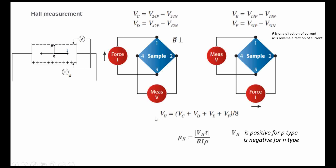From the Hall voltage, mobility is calculated as μ = VH·T / (B·I·ρ), where T is sample thickness, B is the magnetic field, I is the forced current, and ρ is the resistivity obtained from the Van der Pauw method.